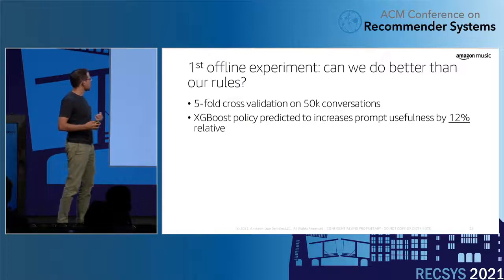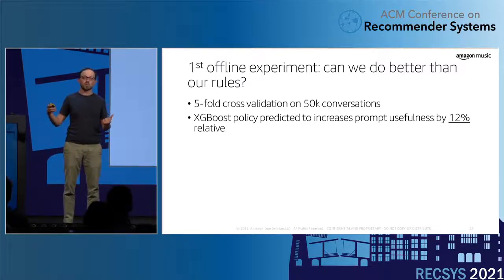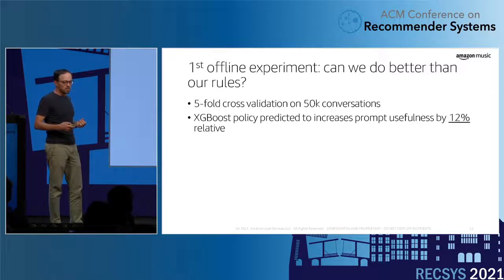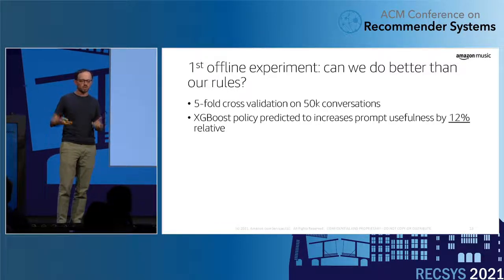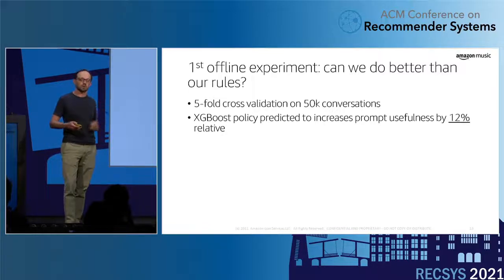In our first offline experiment, we assessed whether we could beat a rule-based system that had been in production for about a year — a fairly decent system that had seen a lot of traffic. We collected some data, did a regular cross-validation, and measured the predicted reward for all those models. We found that XGBoost, surprisingly, performed better than our rules by 12% relative in terms of prompt usefulness. That was pretty encouraging, so we picked that model to deploy to customers.